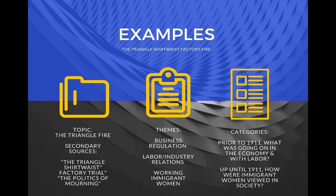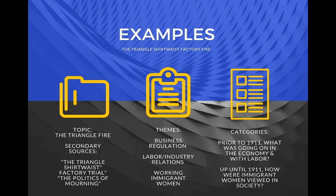She then creates questions with her categories to help identify trends. In terms of the first two themes, she asks: prior to 1911, what was going on in the economy and with labor? That helps her find patterns involving those things, and she goes back and reads the sources again. Another question she develops is: up until 1911, how were immigrant women — or more specifically, working immigrant women — viewed in society? Remember, trends set the scene for the topic you're writing about, as we discussed when introducing milestones.